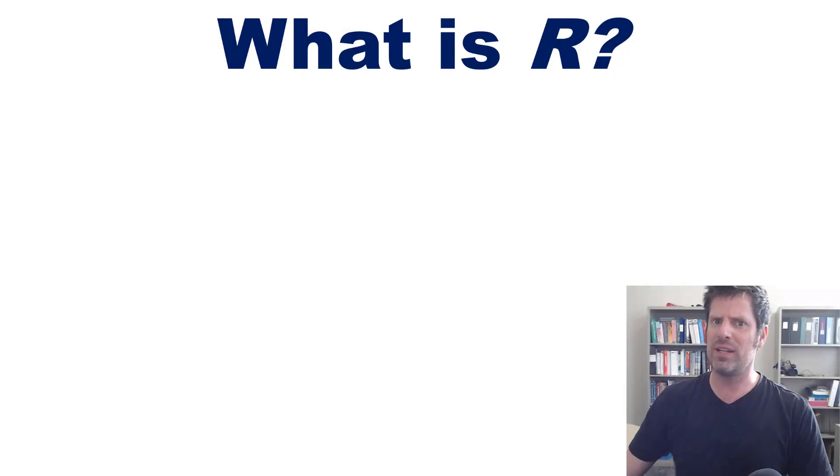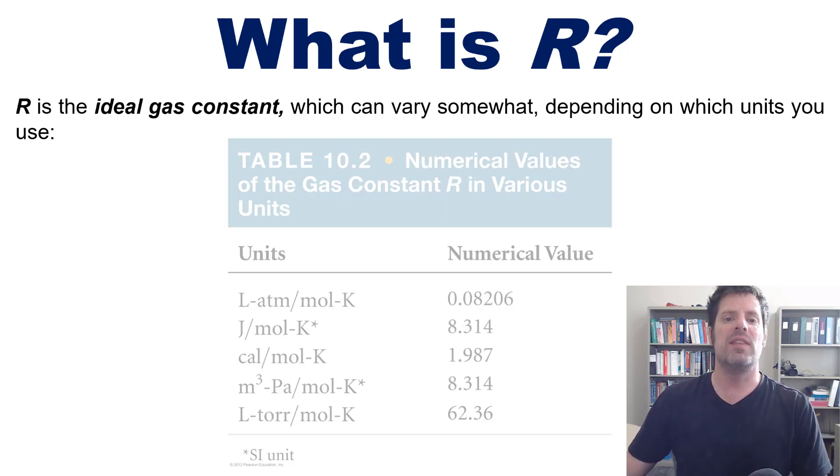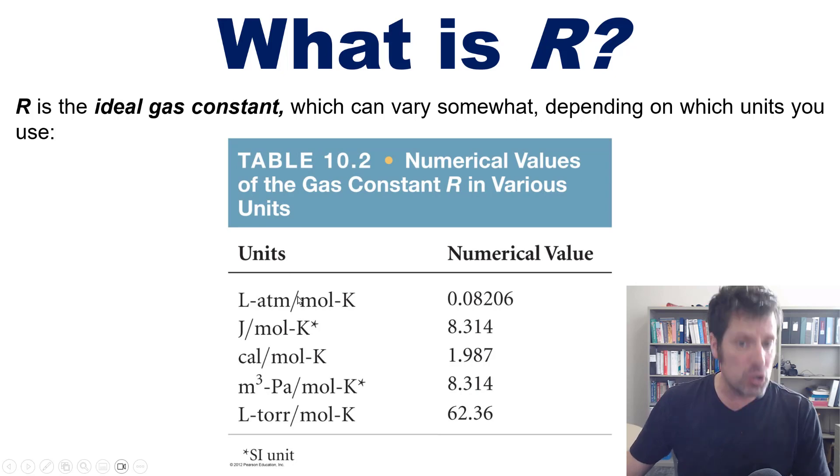So you might ask then, what in the world is R? Well, R of course is the ideal gas constant, which can vary somewhat depending on which units you use. This table right here shows various different versions of the ideal gas constant that are essentially numerically identical, just with swapped out units depending on which set of units you pick. For all of my students who take this class, I will not make you memorize the ideal gas constant but will provide this table for you.